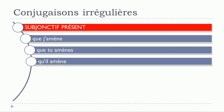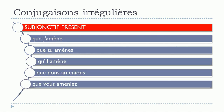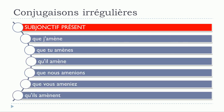Subjonctif présent: que tu amènes, qu'il amène, que nous amènions, que vous amèniez, qu'ils amènent. We can see that the modification affects je, tu, il, and ils at the plural form.